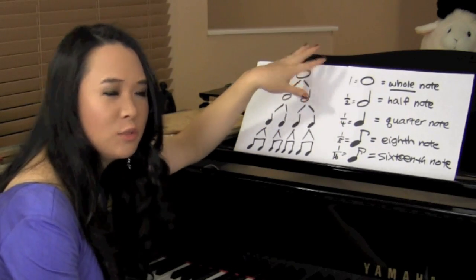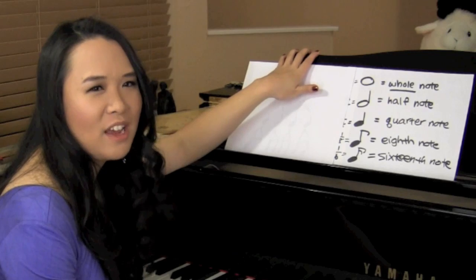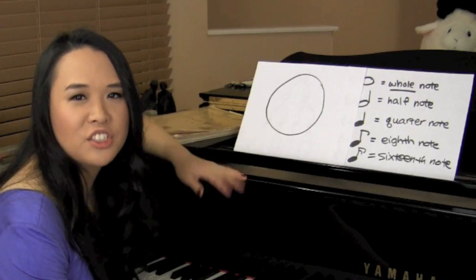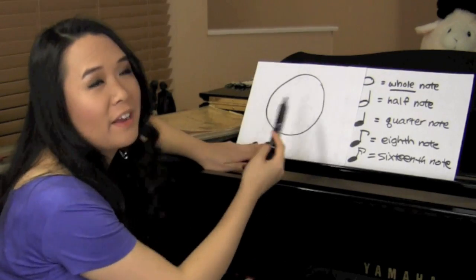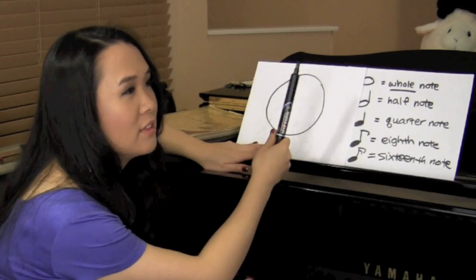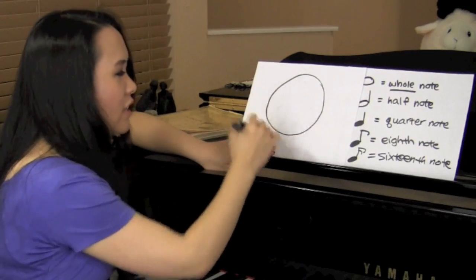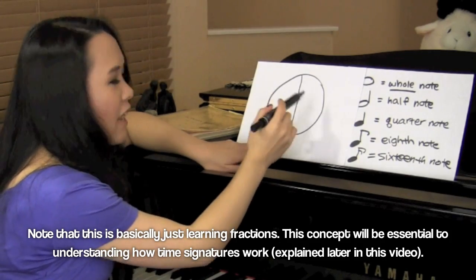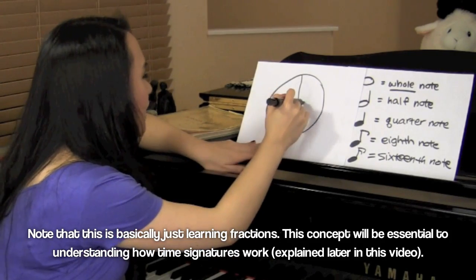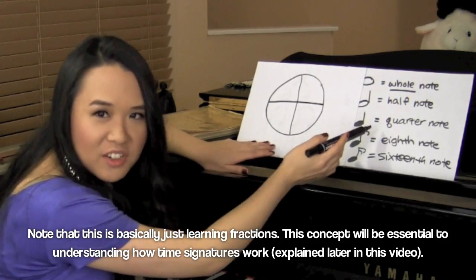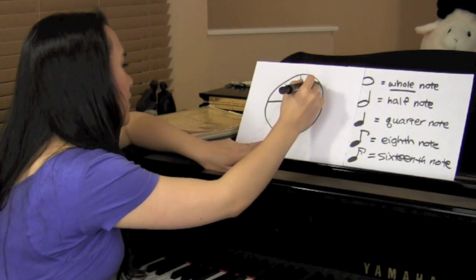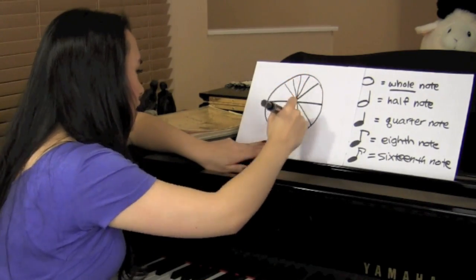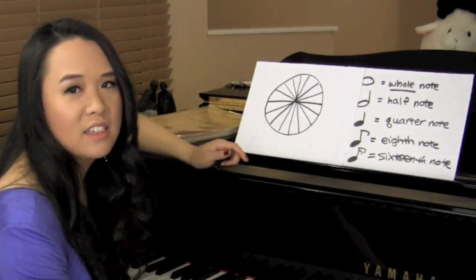Now, if you're not really understanding this and you're more of a visual person, here's a diagram that almost every teacher will teach their students. We're going to start out with a very ugly circle. We're going to pretend like this is a pizza or a pie. We're going to say that this whole value is a whole note. If we divide that in half, you literally get two halves of the whole — half notes. Divide it in half again and you get quarters. Divide that again evenly, you'll get eight pieces — eighths. Divide that again, now you have sixteen pieces — sixteenths.